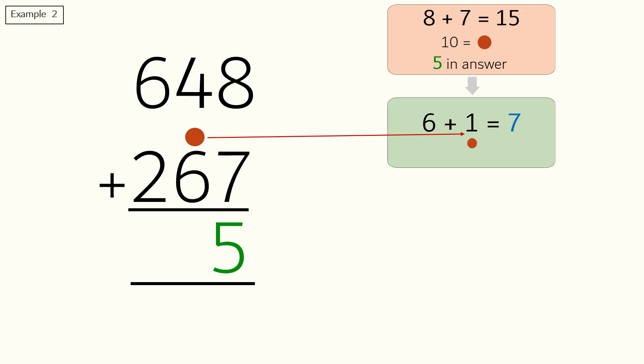Moving on to the tens column, four plus seven is equal to eleven. So we will put a dot for ten above the digit in the next column and write the remainder one in the answer section.